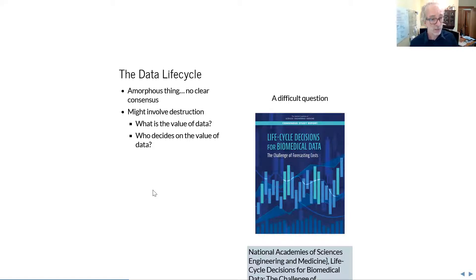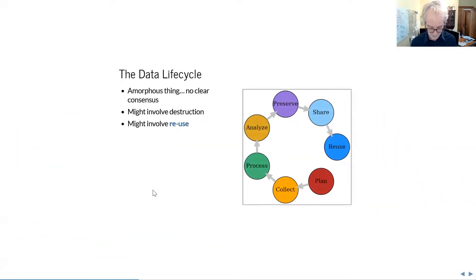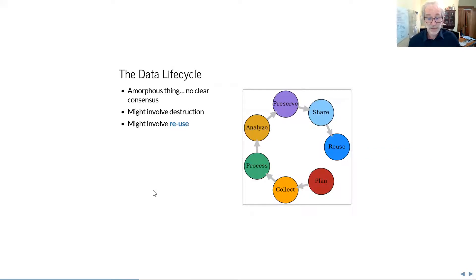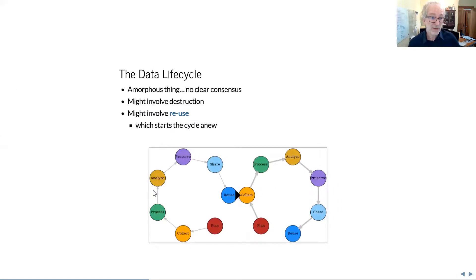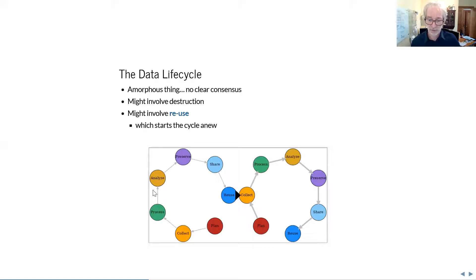Many institutions make that decision regularly — government agencies have record schedules and explicitly decide which types of data are destroyed immediately, which are kept for three years, ten years, or forever in the national archives. In the physical sciences, looking at the CERN accelerator, only a fraction of 1% is ever kept beyond the instance the data is generated, and that data itself has a limited lifespan, getting distilled into ever more aggregate information over time. Data lifecycle might also include reuse — let's not destroy the data, let's keep, preserve, share, and reuse it.